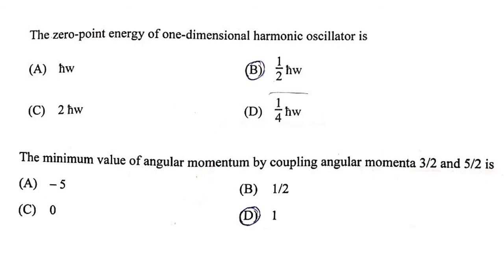The next question: the zero point energy of a one-dimensional harmonic oscillator. For the harmonic oscillator, the energy of the nth state is (n + ½)ℏω. Zero point energy is the ground state energy for n=0, which is ½ℏω.